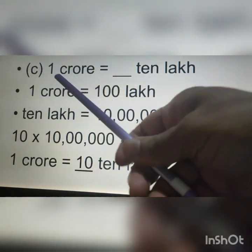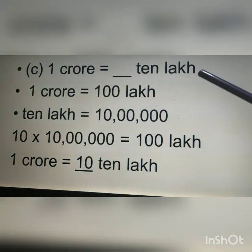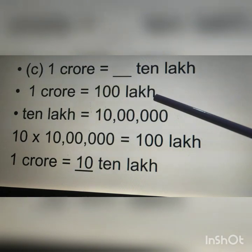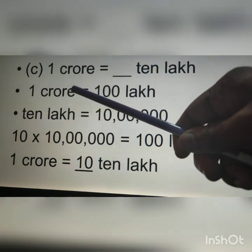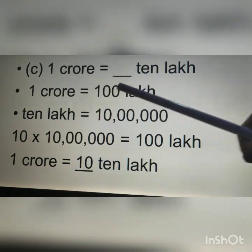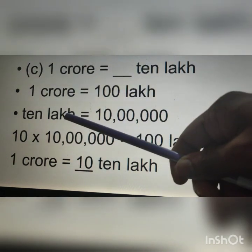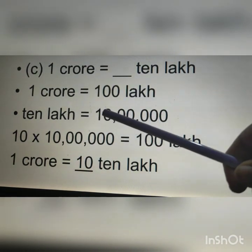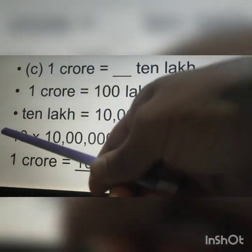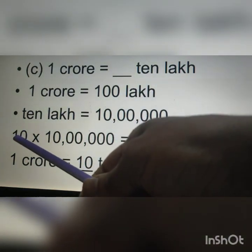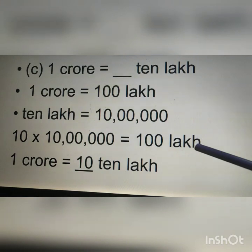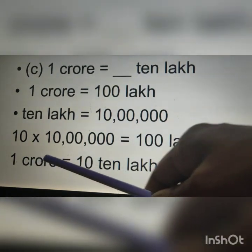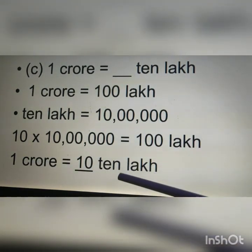Next question: 1 crore is equal to how many 10 lakhs? We know 1 crore is equal to 100 lakhs. In 1 crore after 1 there are 7 zeros, and in 10 lakhs there are 6 zeros. So if we multiply 10 lakhs with 10 we will get 100 lakhs. Therefore, 1 crore is equal to 10 ten-lakhs.